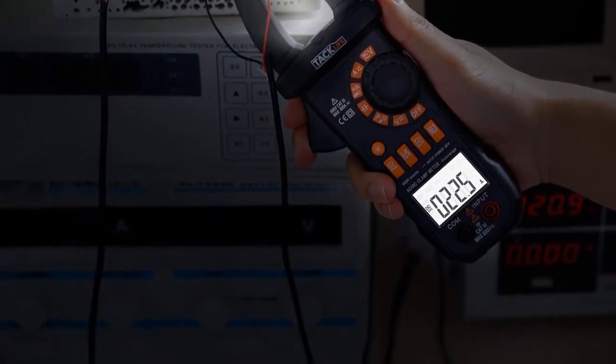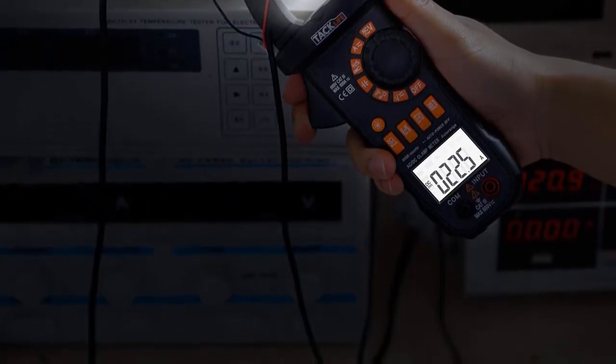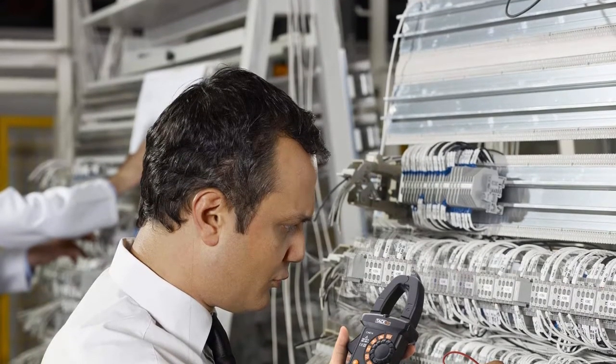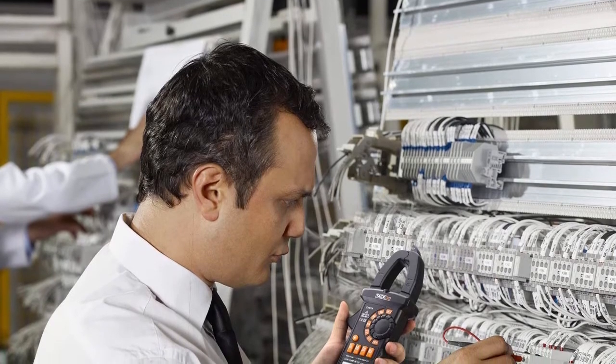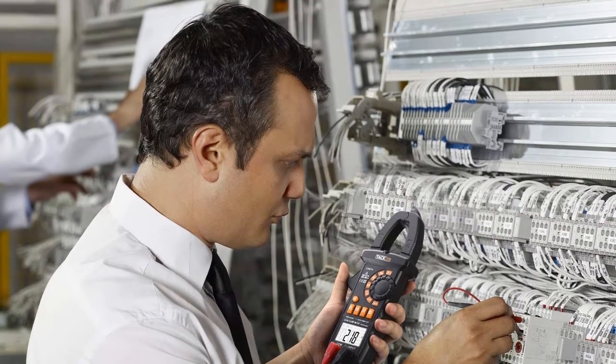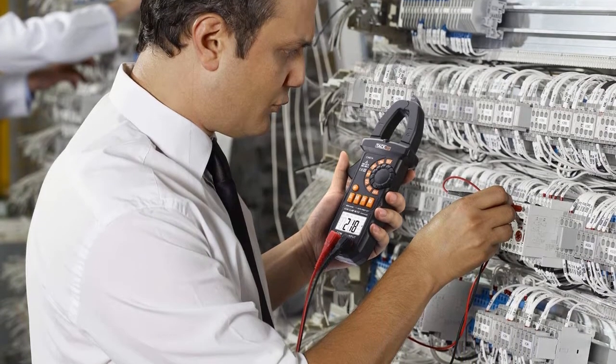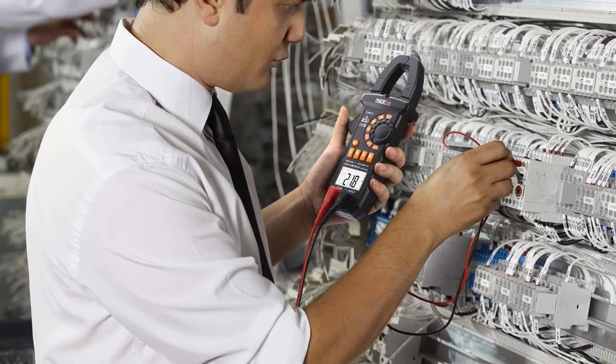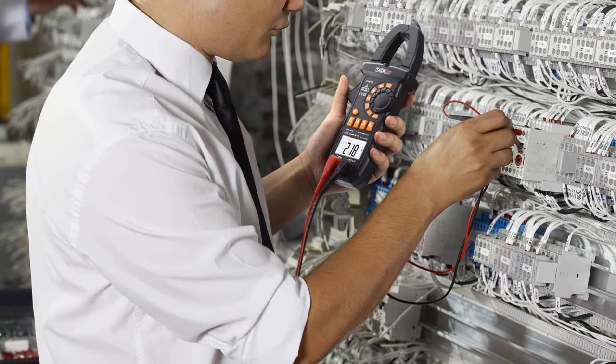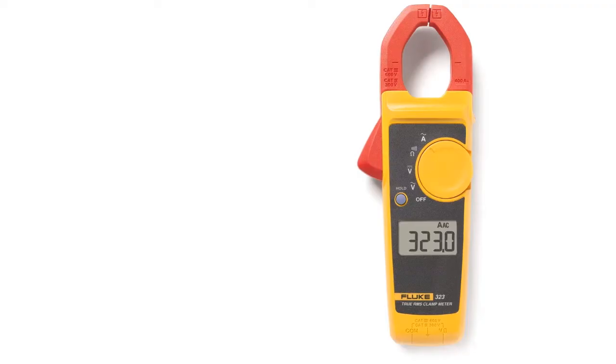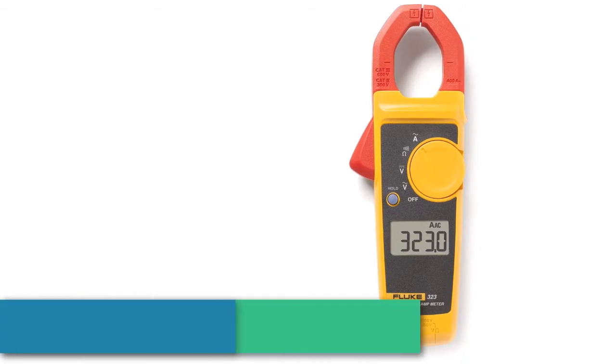Multifunctional and easy to read. High definition large backlit LCD provides better visibility in dark working areas. Zero function helps decrease the data error influenced by the Earth's magnetic field to obtain more accurate measurements. Automatically enters sleep mode after 30 minutes of inactivity for energy conservation. Data hold function and low battery indicator.